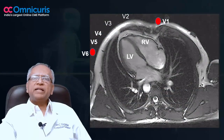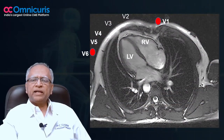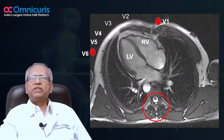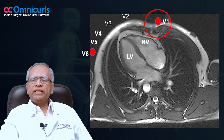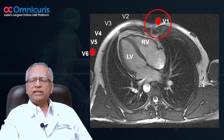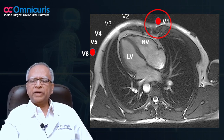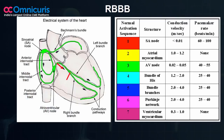This is a schematic diagram of a CT scan of the heart. What you are seeing is this is posterior, which is the vertebra, and this is anterior, which is the sternum. Roughly your V1 is placed towards the right of the sternum in the fourth intercostal space, then V2, V4, up to V6 comes towards the apex of the heart.